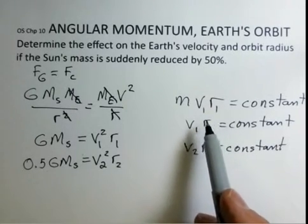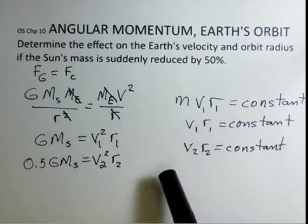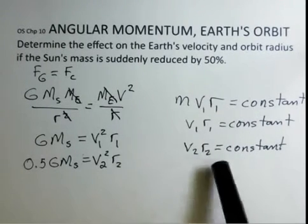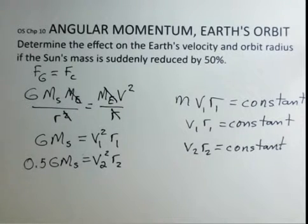But if we have a situation where there's no torque on the Earth, no external torque, then the angular momentum is conserved. And that will be the case if just suddenly we hypothetically take away 50% of the Sun's mass. And so mvr is a constant. The v and the r's are going to be changing, but the multiplication together will be a constant. Let's see how we can take advantage of this.